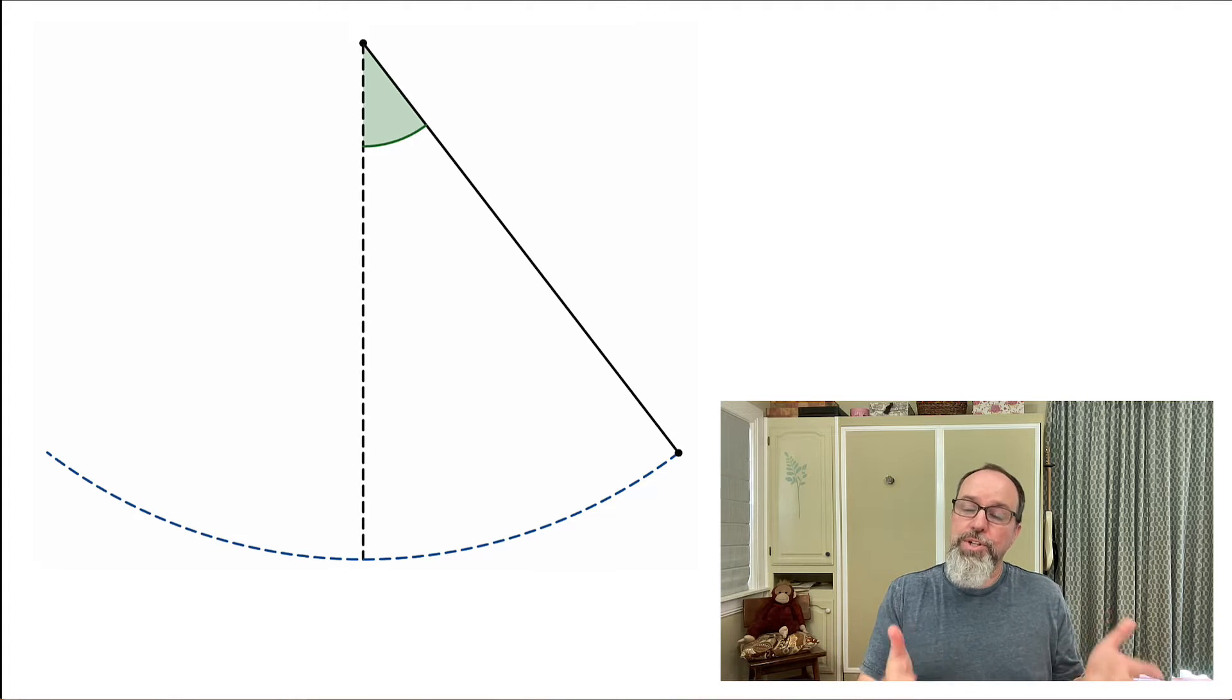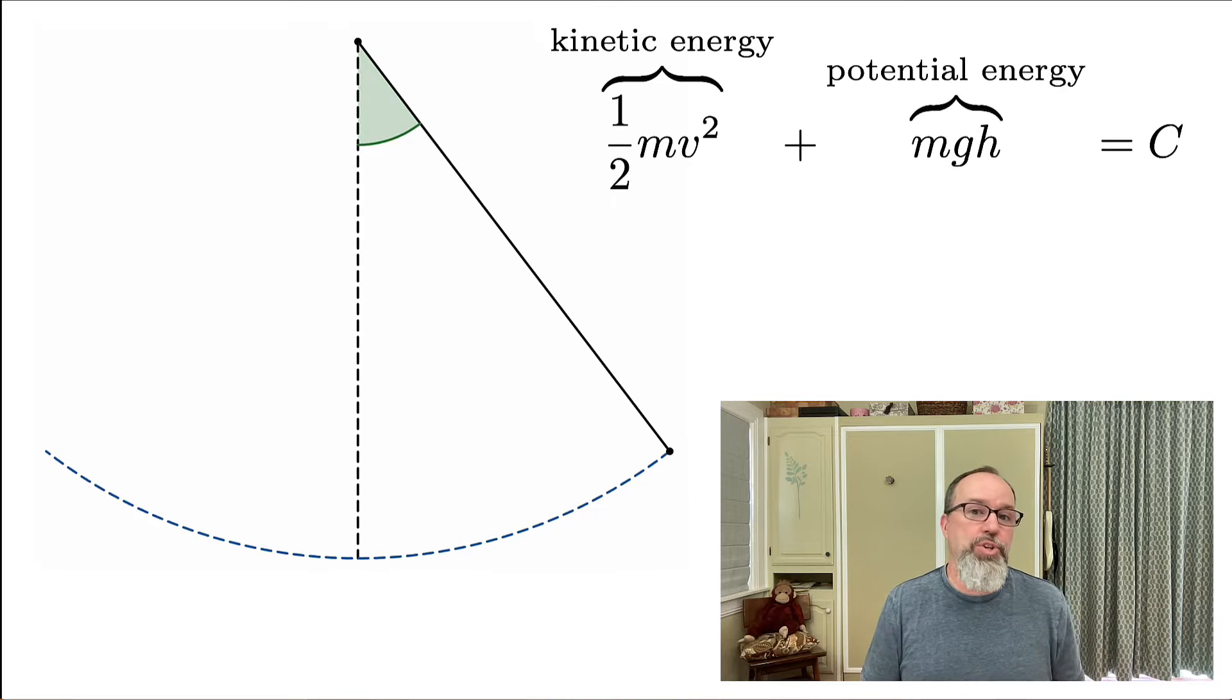We're going to describe this motion using a formula from a first semester physics class on mechanics. It's called the conservation of energy, and it says that the kinetic energy—the energy created by an object moving—plus the potential energy—the potential energy that can be gained by an object moving—those two things have to add up to a constant value.